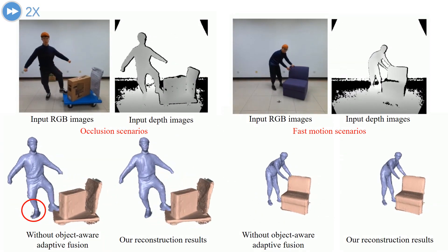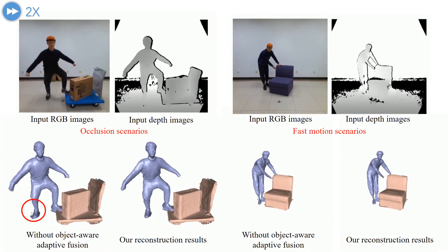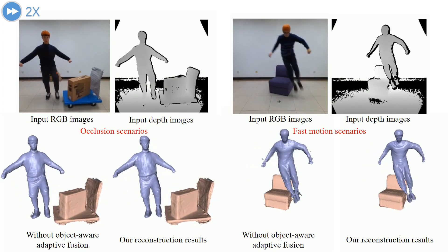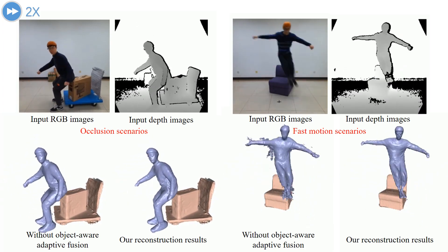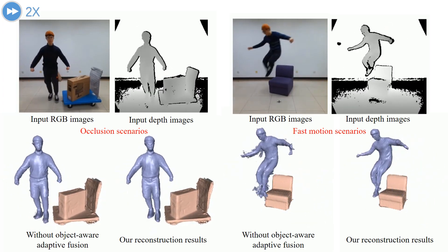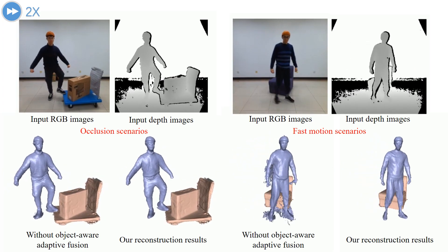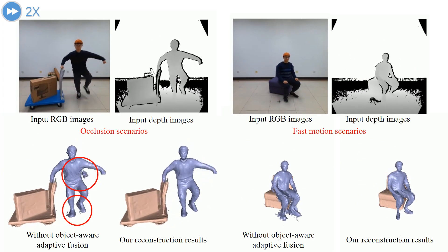Finally, our object-aware adaptive fusion scheme based on the occlusion relation and semantic cues can help obtain temporally coherent human-object reconstruction, both in occlusion scenarios and fast-motion scenarios.